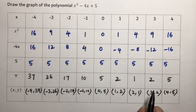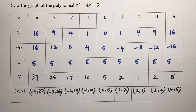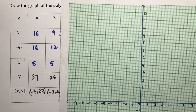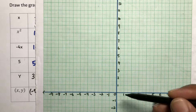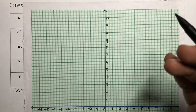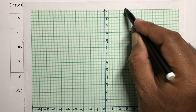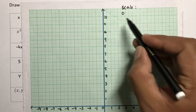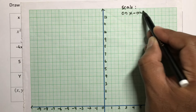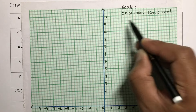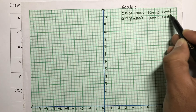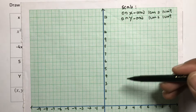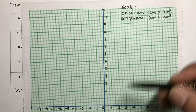Now we need to plot all these x and y values on the graph. On the x-axis I took the scale 1 centimeter = 1 unit, and on the y-axis also 1 centimeter = 1 unit. Write the scale on both axes. I did this with a sketch pen so the video is a little clearer; you should do it with a pencil.